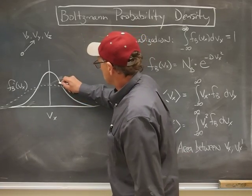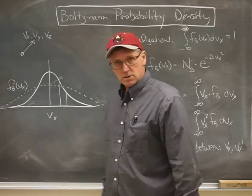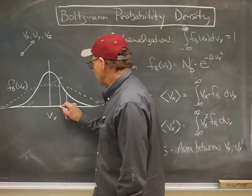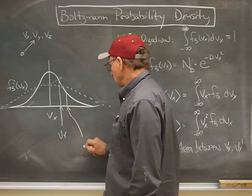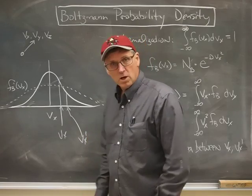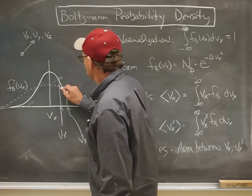So let's suppose I was interested in the speed that this molecule is going between that point here, which we'll call vx, and that point there, which I'll call vx prime. What's the probability that I'm going to find a molecule going in those speeds?